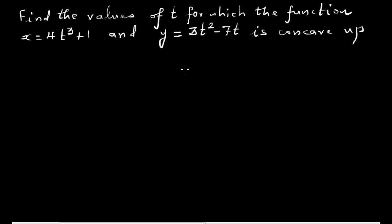Find the values of t for which the function x = 4t³ + 1 and y = 3t² − 7t is concave up. Before we do the differentiation, let me talk about concave up and concave down.